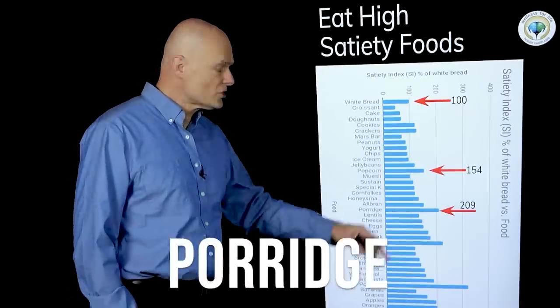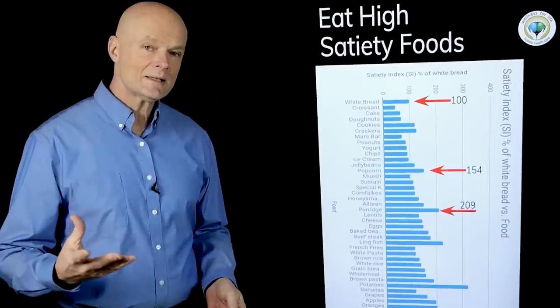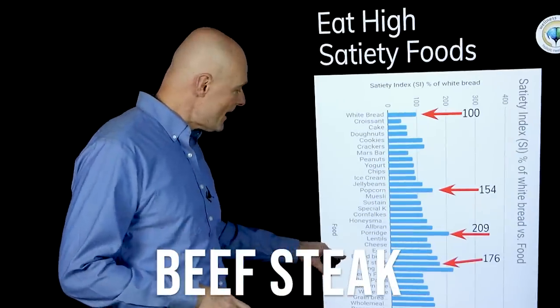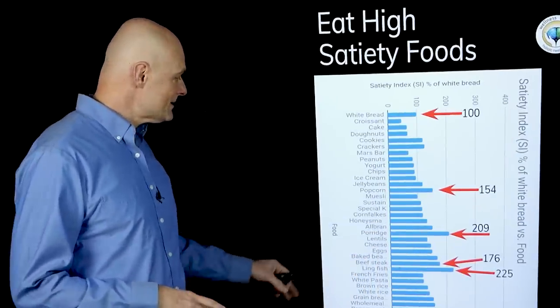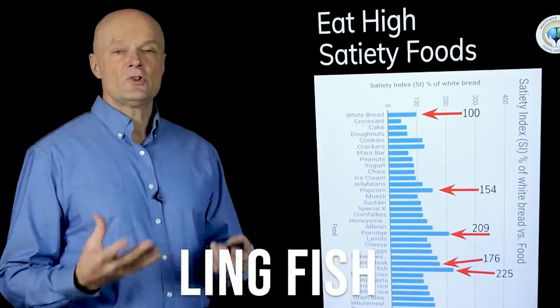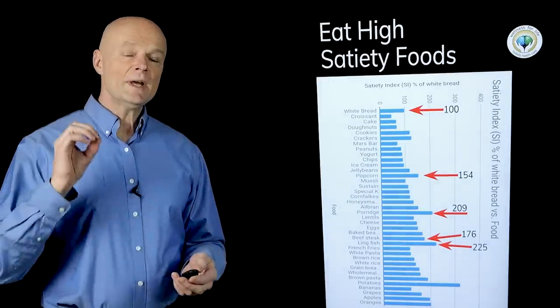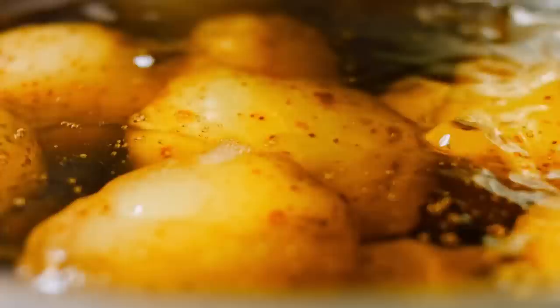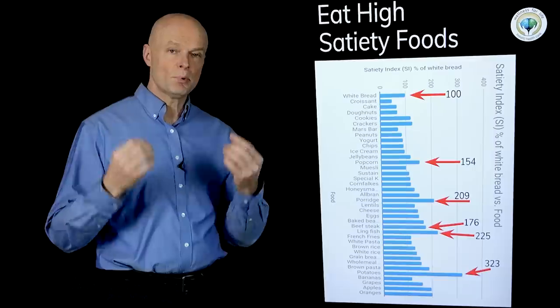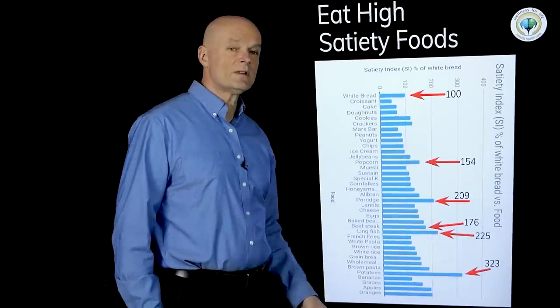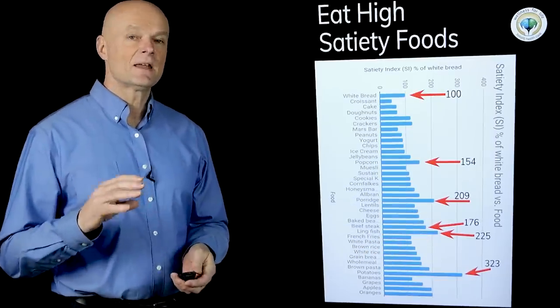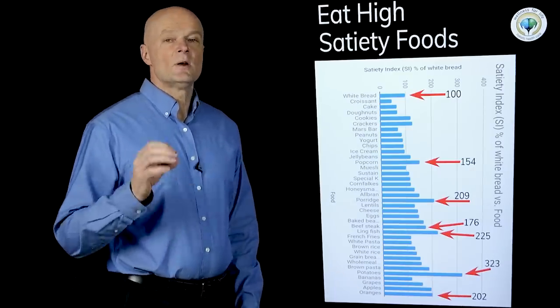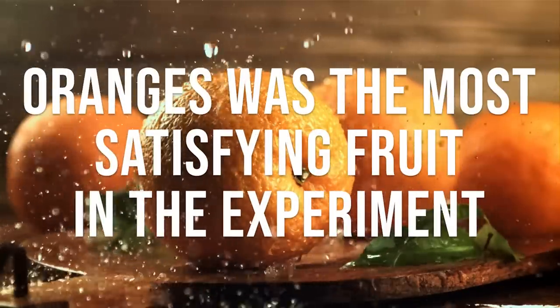They found that porridge also known as oatmeal was twice as satisfying as white bread. They found that beef steak had 176 and a type of fish known as lingfish had 225. And interestingly the winner in this entire experiment was potatoes. Boiled potatoes at 323 was more than three times as satisfying as white bread. And in the fruit category oranges was the most satisfying at 202.